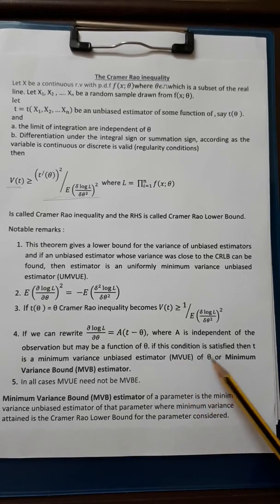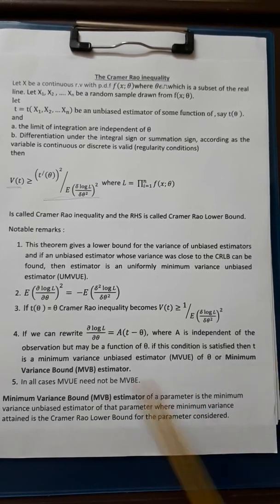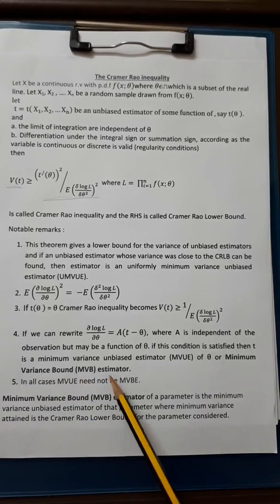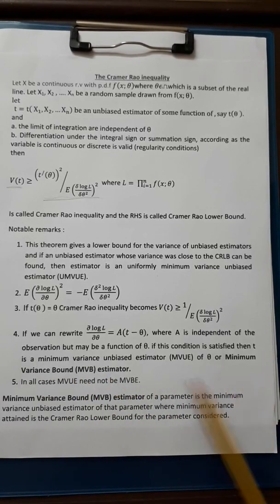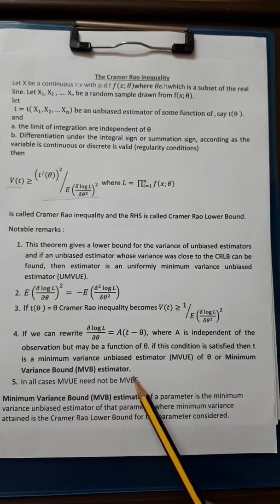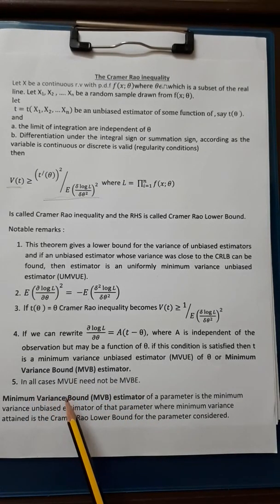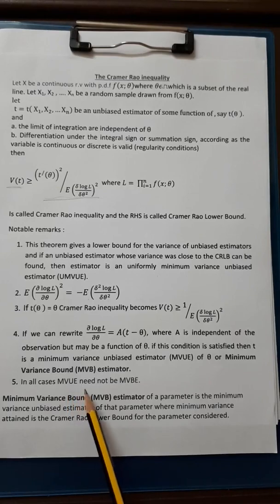If this condition is satisfied then t is a Minimum Variance Unbiased Estimator of θ or Minimum Variance Bound Estimator (MVBE). In all cases MVUE need not be MVBE.